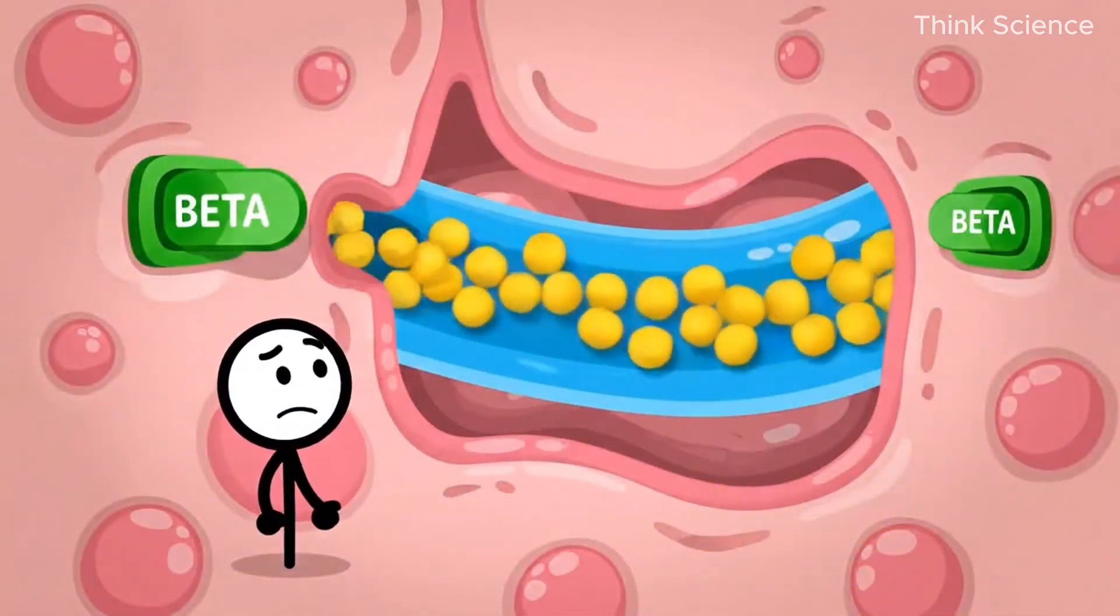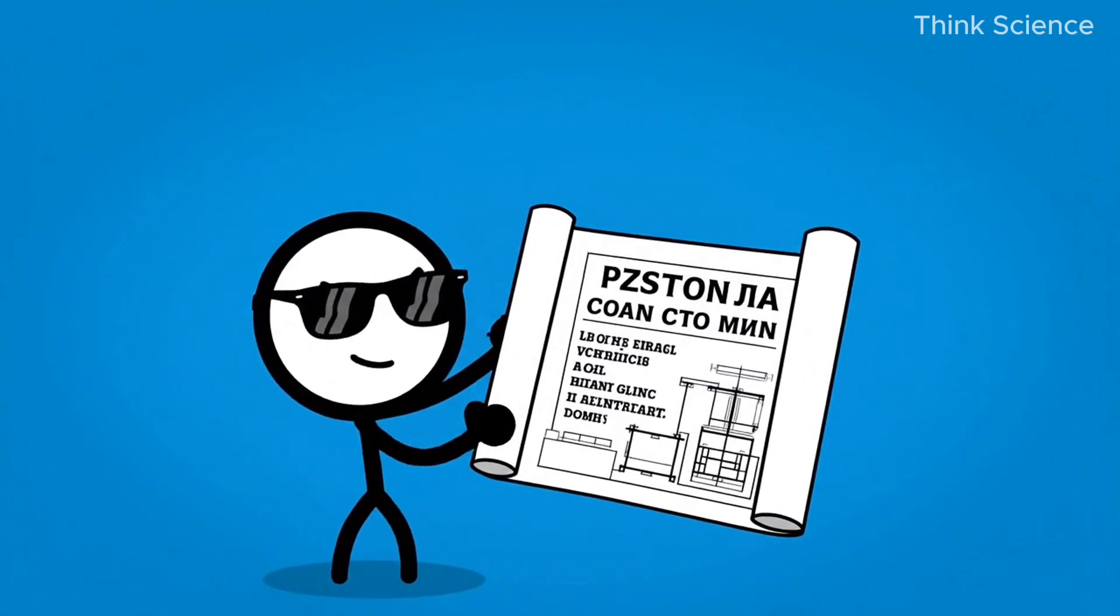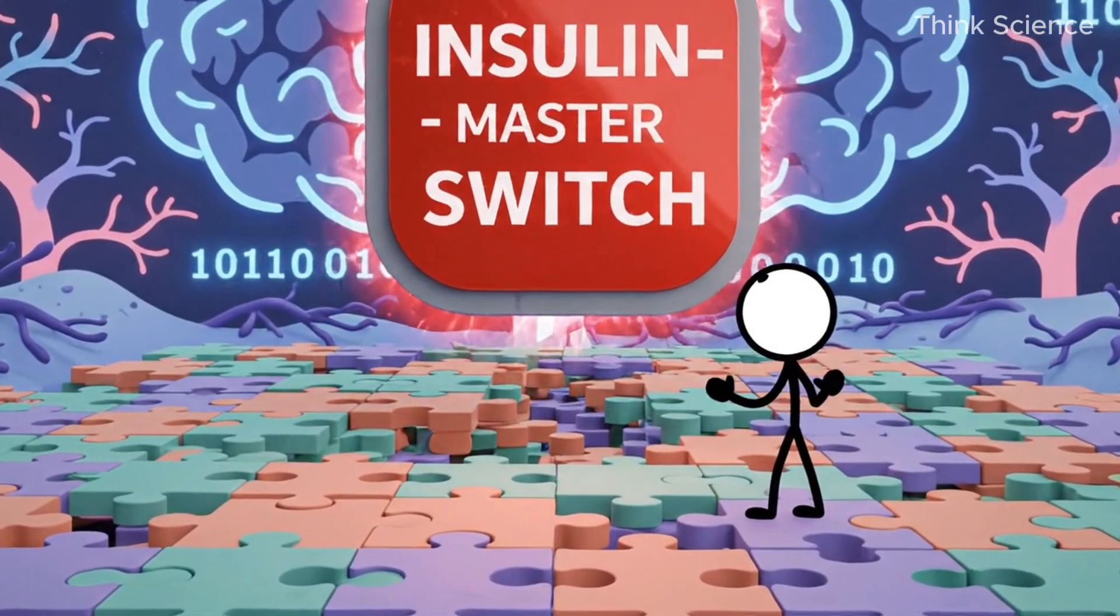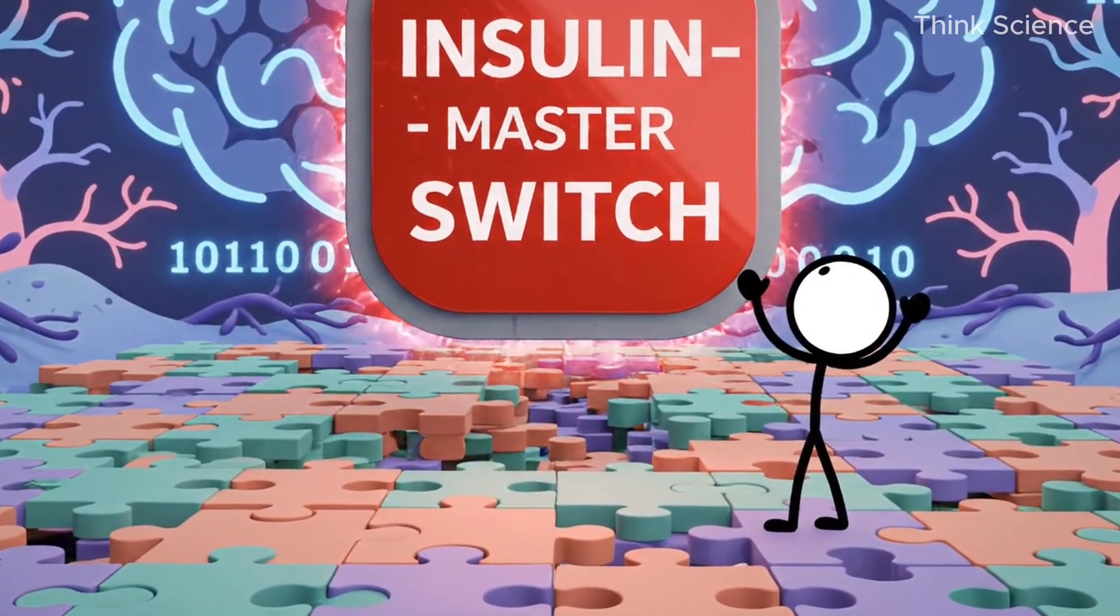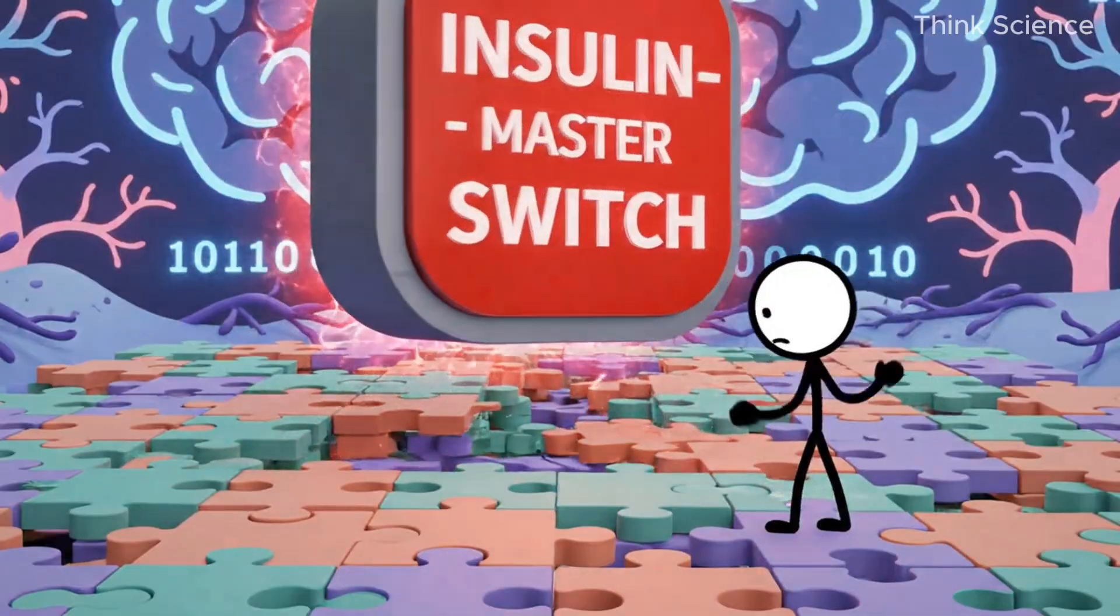In a moment, I'll show you how to outsmart those stubborn receptors. But before that, there's one more roadblock we need to expose. The hormone that sits above everything else. Insulin. If you understand this hormone, the entire fat loss puzzle starts making sense.